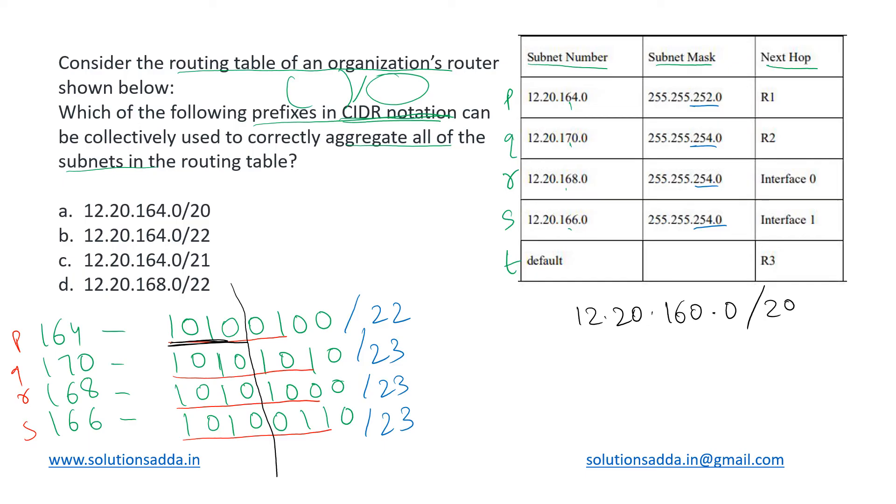Let's first have a look at subnets Q and R. In this we can see that first six bits are the same and the last two bits are different. So these two can be combined together to give 12.20 dot—what is the value of these first six bits? 160 plus 8, so 168 dot 0 and slash 22 because we have included six bits.